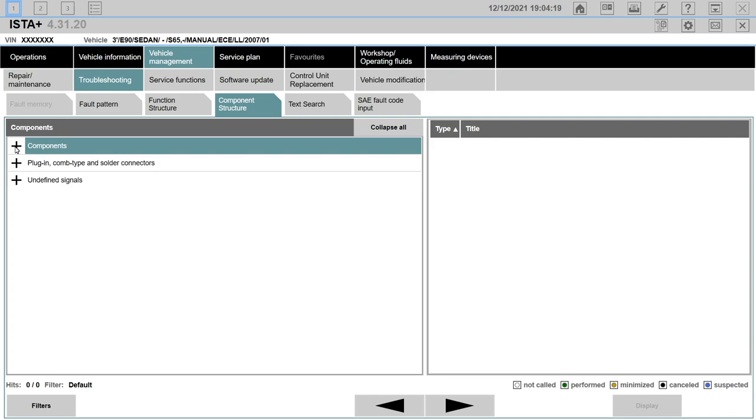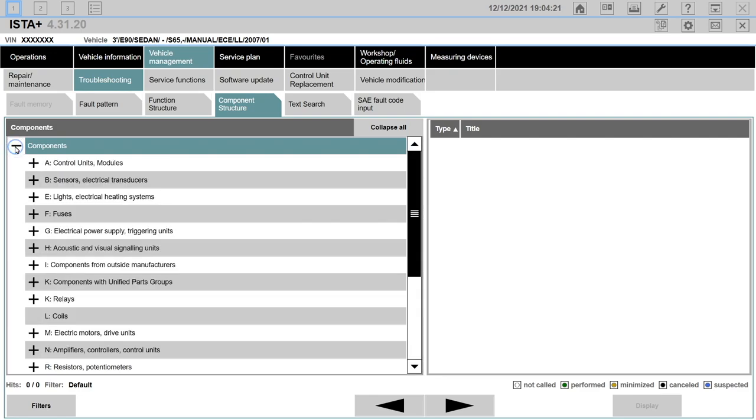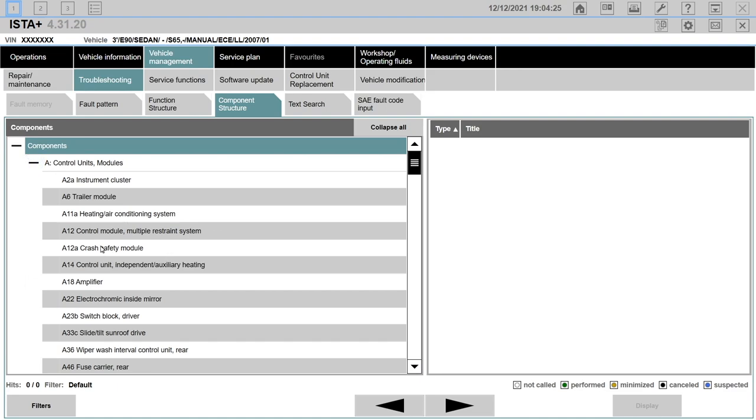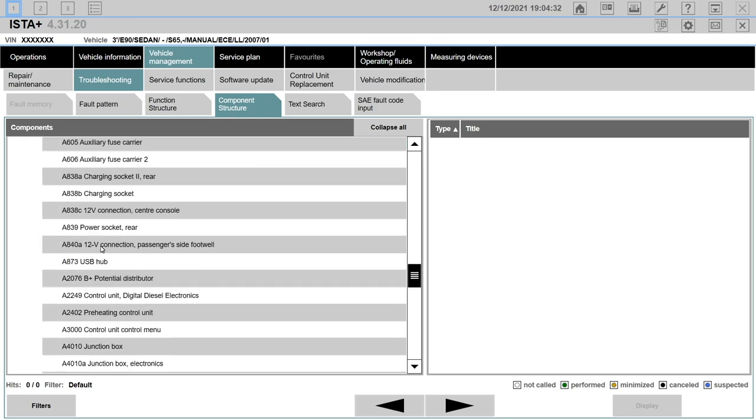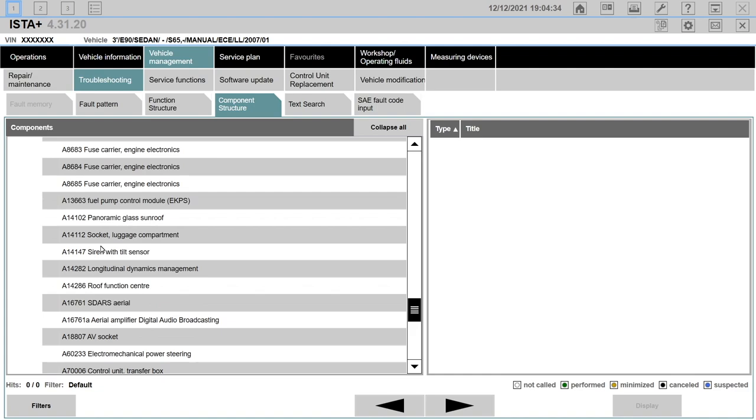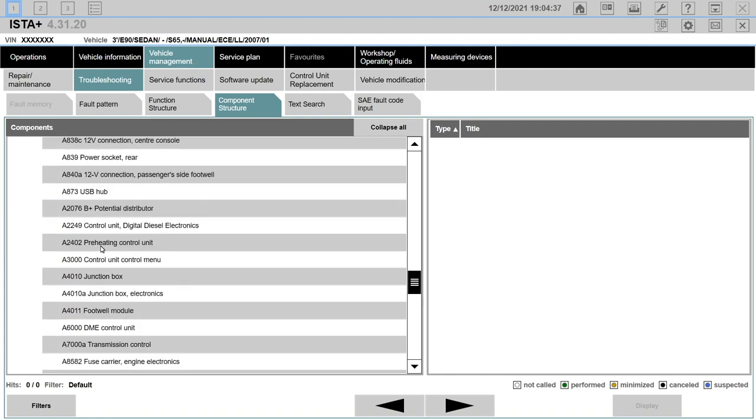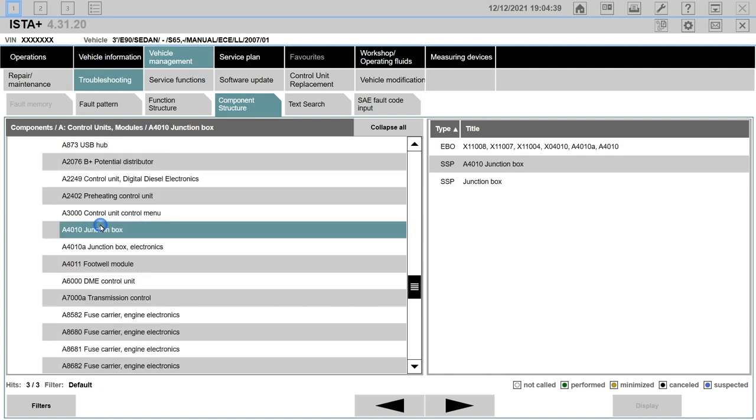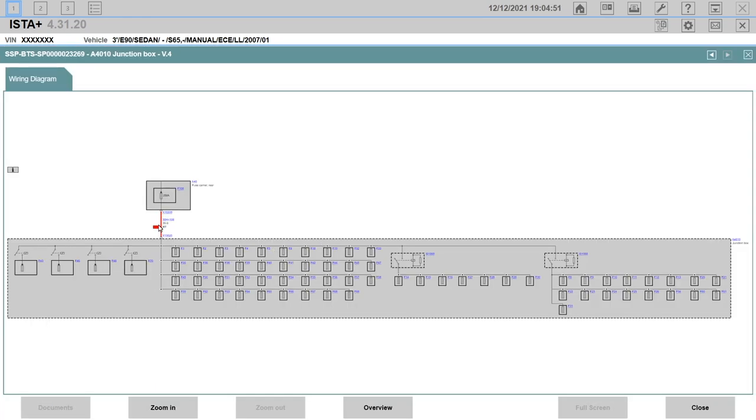Open the directory tree for components. Go to A, control units. The junction box, or the fuse box, is numbered A4010. A4010 is right here. We can see all the fuses inside the junction box, but it is not very clear which terminals they are on.